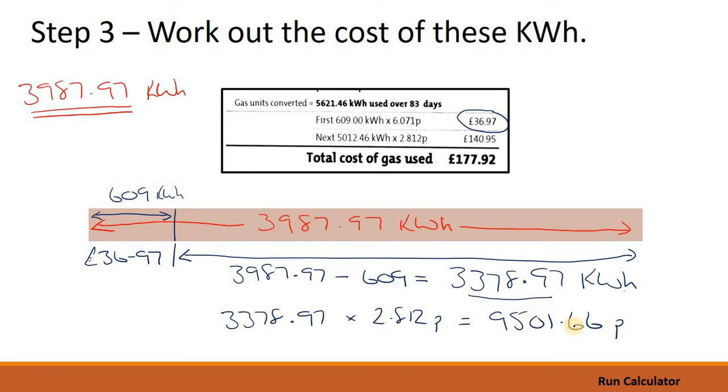So 9,501.66 pence. Now, that's great. The only problem is it isn't pounds and that's a bit clunky. So let's convert this into pounds. To convert it into pounds we just take that huge number of pennies and we divide it by 100.